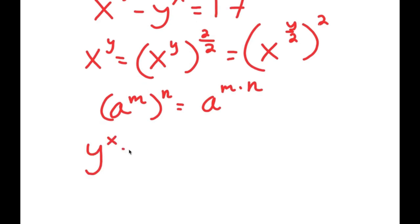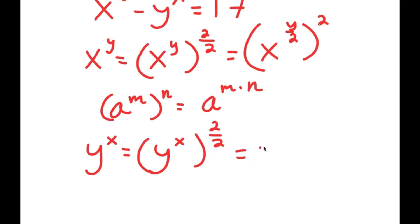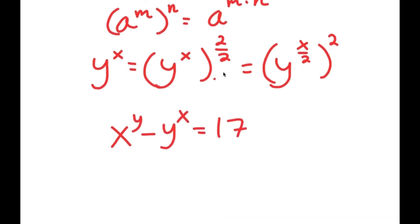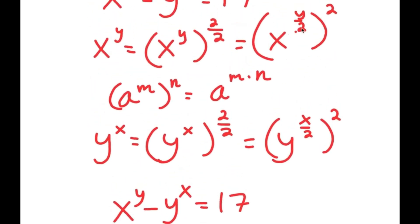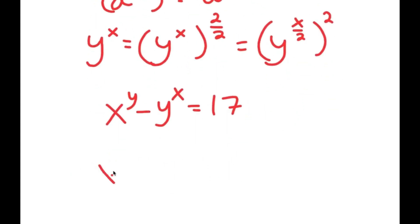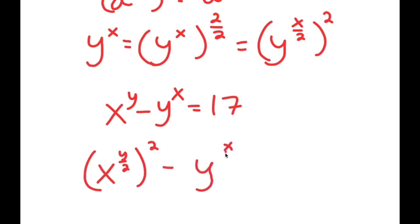Now y to the power of x, I can also change this up. I can rewrite y to the power of x as y to the power of x to the power of 2 over 2. And this I can rewrite as y to the power of x over 2 to the power of 2. Now, from here, remember my original equation was x to the power of y minus y to the power of x equals 17. I can replace those terms to get x to the power of y over 2, all to the power of 2, minus y to the power of x over 2, all to the power of 2, is equal to 17.